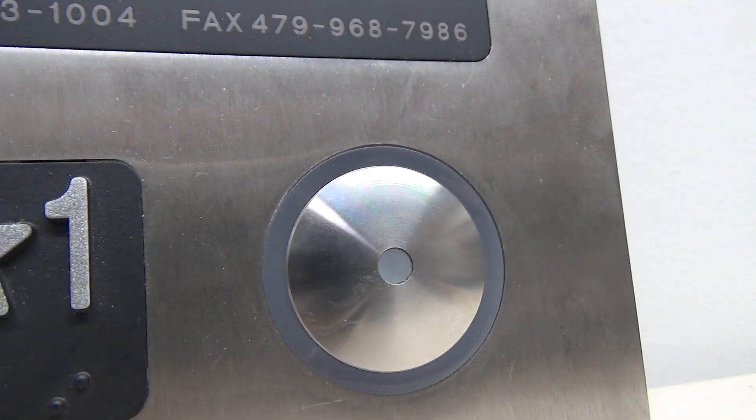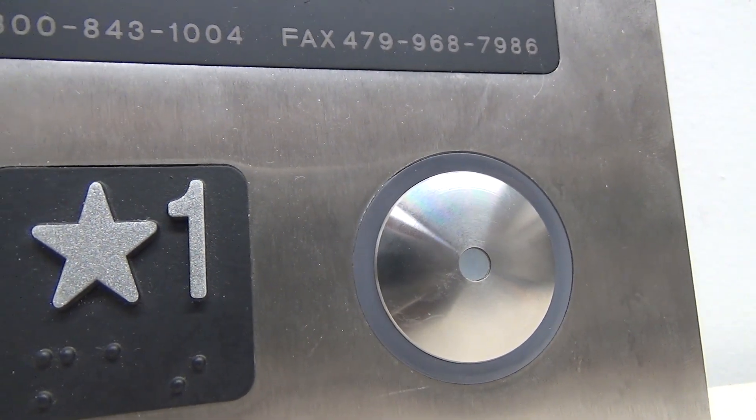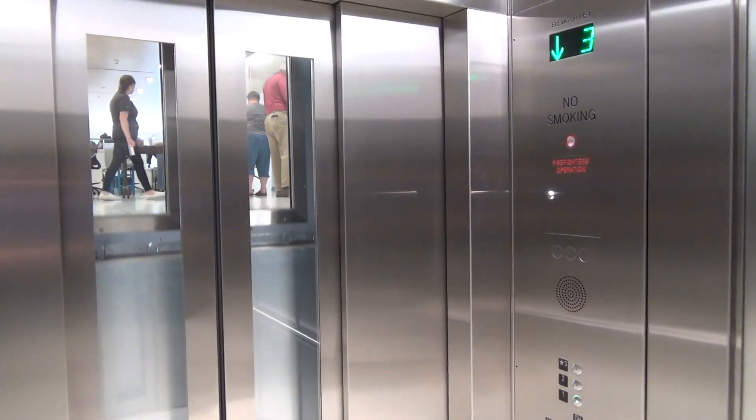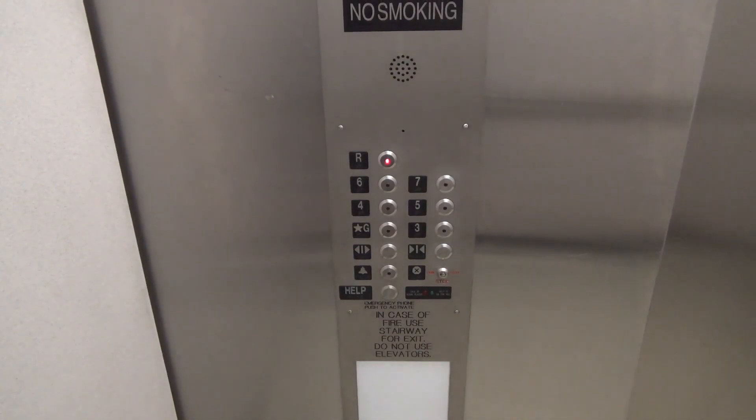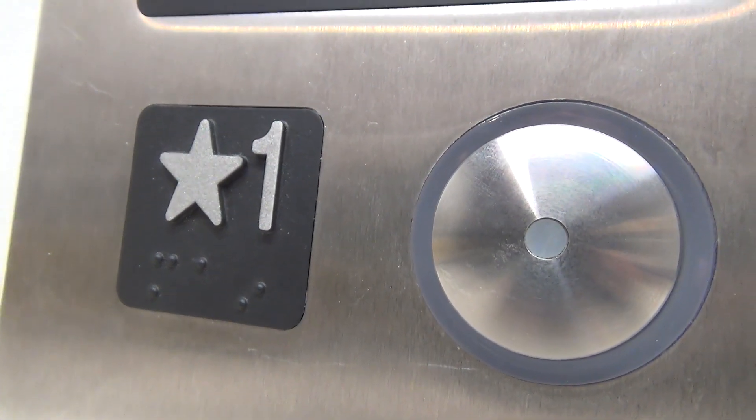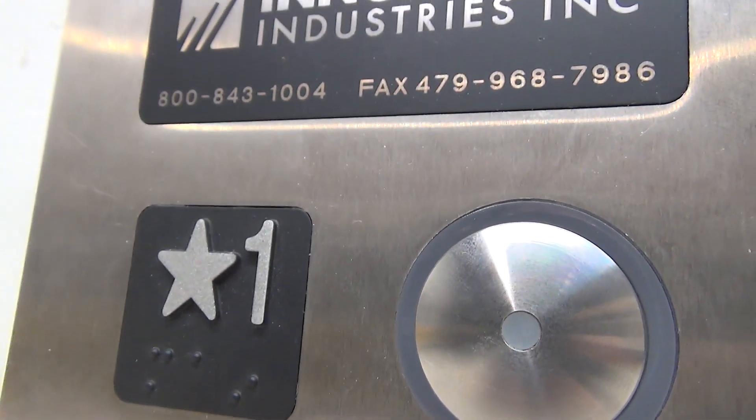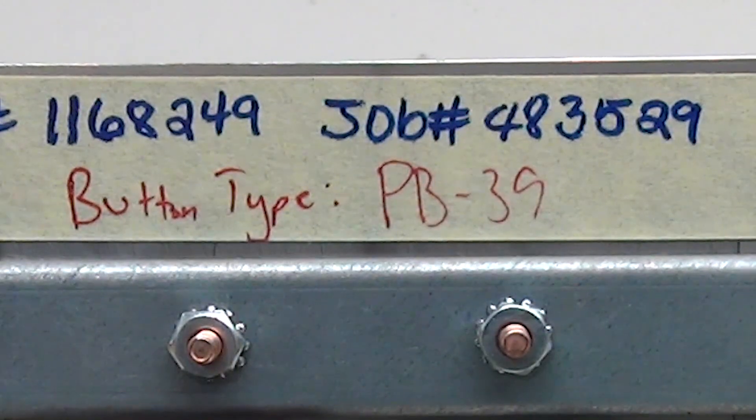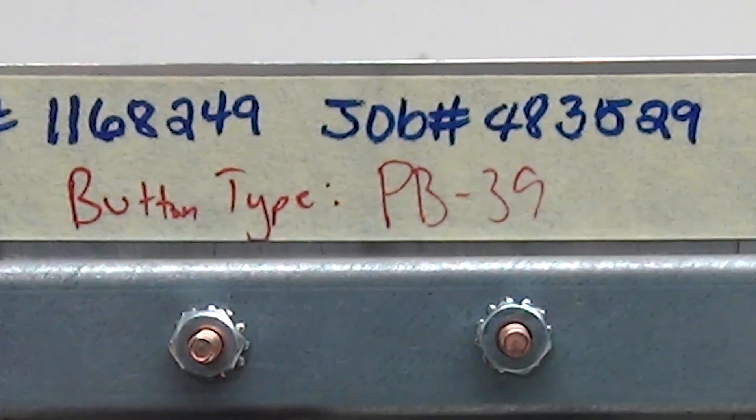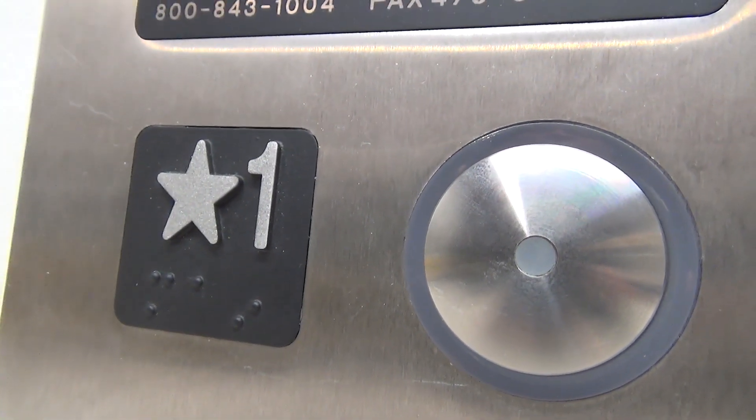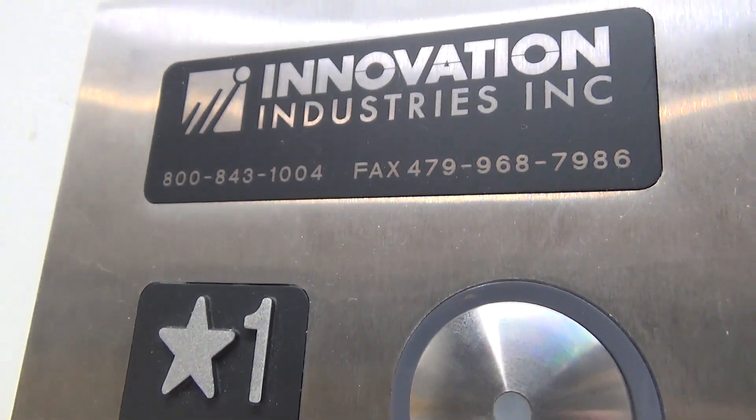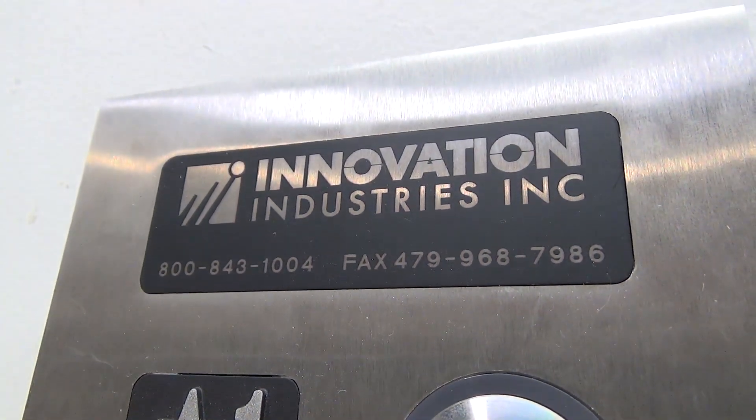So today we're taking a look at these innovation buttons, which are commonly found on newer or modernized elevators and they come in a bunch of different variants. Now the one we'll be taking a look at today is on an innovation sales sample and this one is the PB-39 type of button. Just taking a look at the fixture from the front, you can see we have a Braille, the button itself, and the little innovation industries plate on the top.